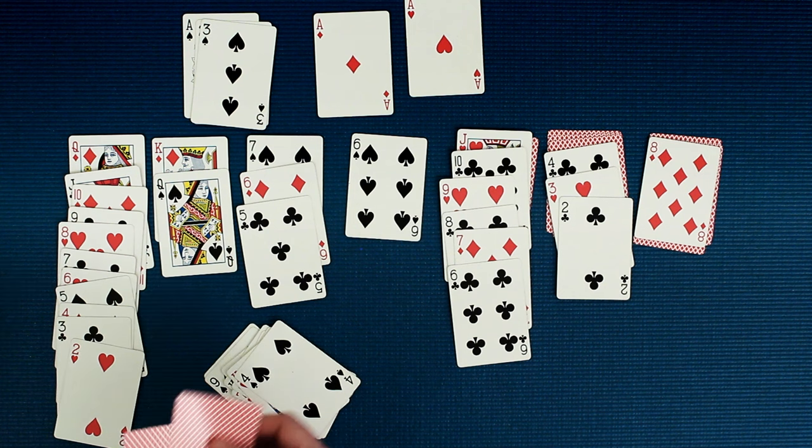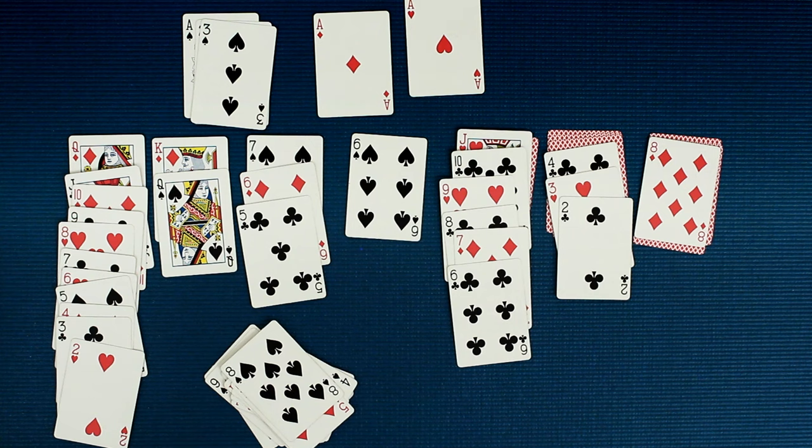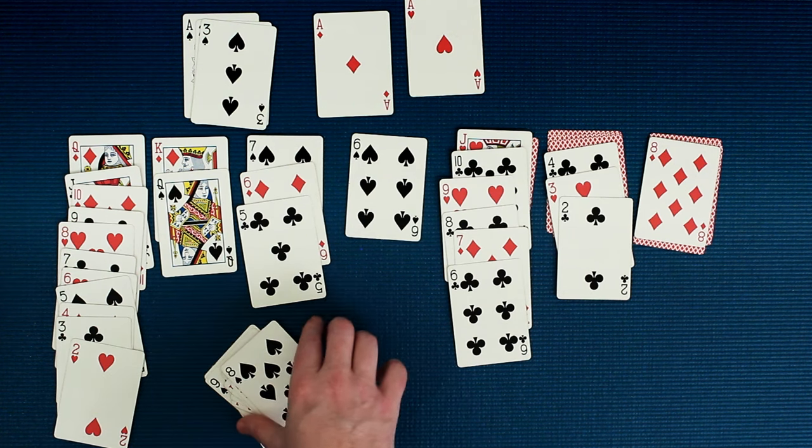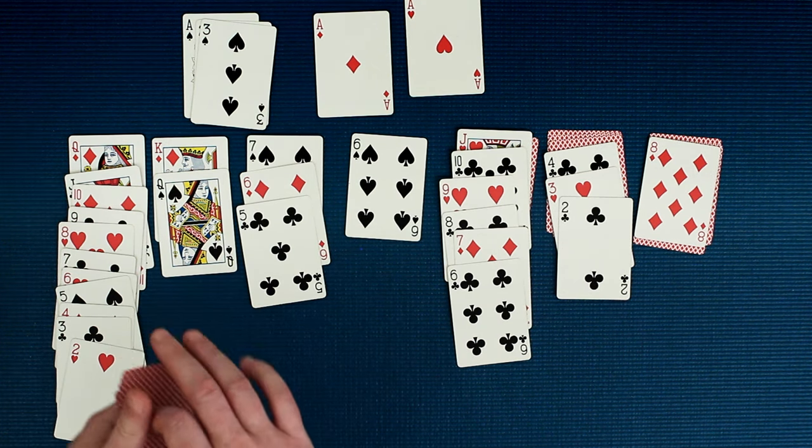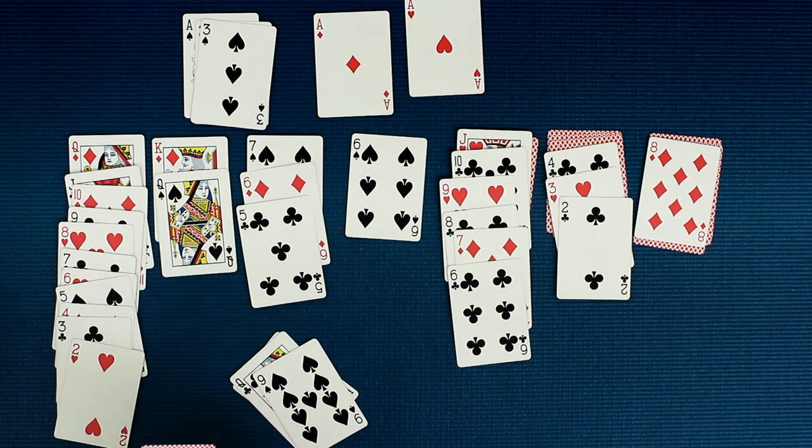When you reach the end of the deck and you have less than three, you just put the rest down and use what you have. Then you scoop up the talon, don't shuffle it, and deal three more again. And you could pass through the deck as much as you want.